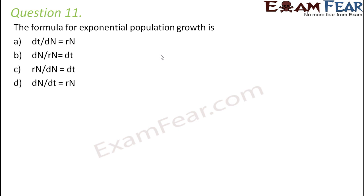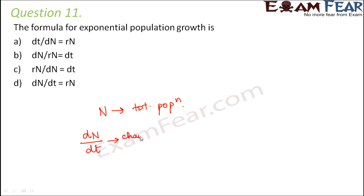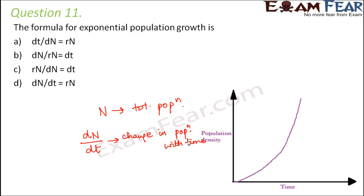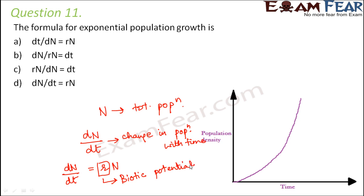Question number 11. The formula for exponential population growth: if N represents the total population, growth of population with time is denoted by dN/dt. The relationship is dN/dt = rN, where r represents the biotic potential of each individual in the population. So the right option is D.